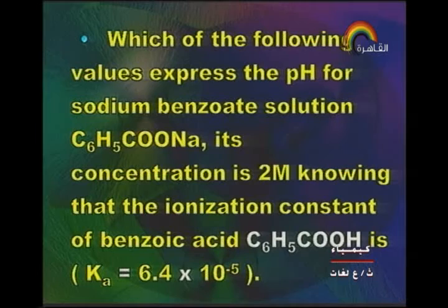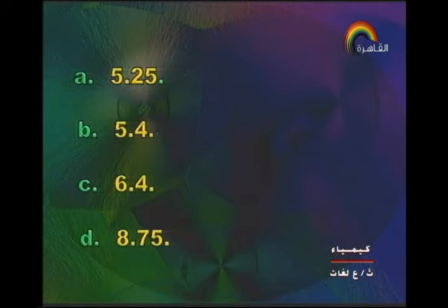Next type of question: choose the correct answer. Which of the following values expresses the pH of sodium benzoate solution C₆H₅COONa at 2 molar concentration, knowing that the ionization constant of benzoic acid Ka = 6.4×10⁻⁵? Options: 5.25, 5.4, 6.4, or 8.75. The hydrolysis of sodium benzoate gives a weak acid and strong base, so the solution is alkaline with pH greater than 7. The answer is 8.75.